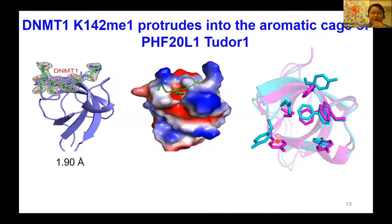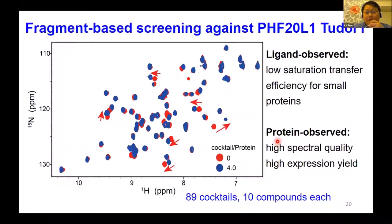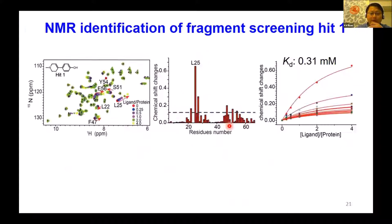Since the Tudor domain can recognize a natural substrate, maybe it can also recognize small molecules. So we carried out a fragment-based vitamin D screening. The PHF20L1 Tudor domain has very high spectral quality. We screened over 89 cocktails with 10 compounds each, and found some cocktails with remarkable chemical shift perturbations. We then tested each individual component, and dose-dependent chemical shift changes demonstrated the binding site as well as the binding affinity.